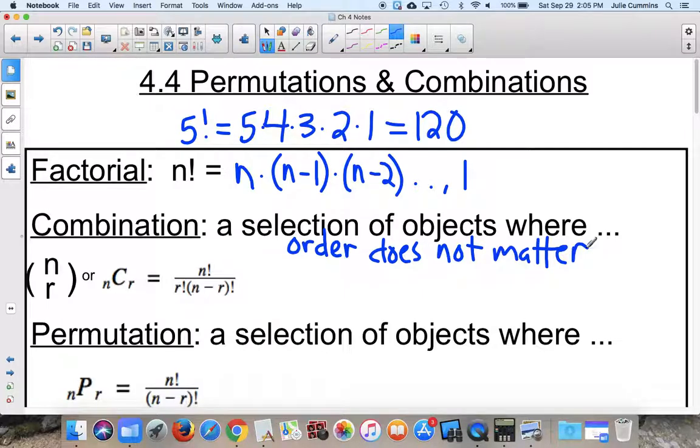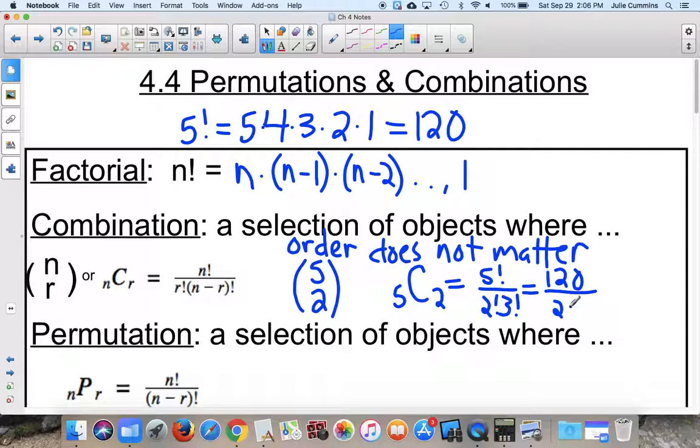There's 2 different ways to write this. One is this parenthesis, n over r. In our movie example, we have 5 movies, and we're going to choose 2 of them to watch. The other way that we write it is 5C2. The n is the number of things we have to choose from. The r is how many spots we're actually going to fill. The formula for this is n factorial over r factorial times n minus r factorial. In our movie example, it would be 5 factorial over 2 factorial times 3 factorial. 5 factorial is 120, 2 factorial is 2, 3 factorial is 6. So 120 divided by 12 is 10. There are 10 different ways to pick those 2 movies for tonight.